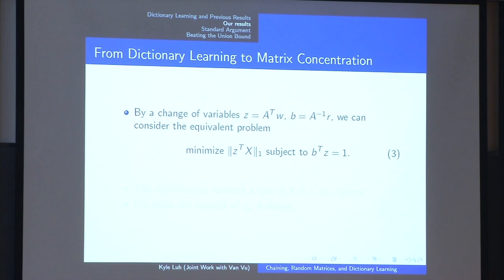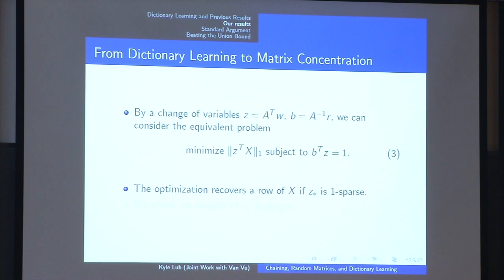For the analysis, it's convenient to make a substitution in notation. The previous minimization problem is equivalent to minimizing z^T X subject to b^T z, where b is a sum of columns of X. This solution is a row of X precisely when z is one-sparse — a scaled row of X, and we don't care about scaling. So the proof boils down to showing that once I minimize this, z* is one-sparse. In their proof they show the sparsity of z* in stages, and we're going to focus on the stage that requires chaining.